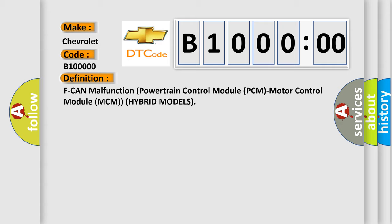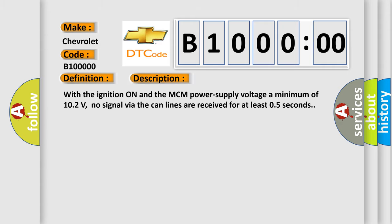And now this is a short description of this DTC code. With the ignition on and the MCM power supply voltage a minimum of 10.2 volts, no signal via the CAN lines are received for at least 0.5 seconds.